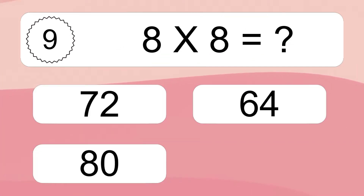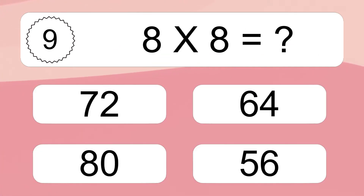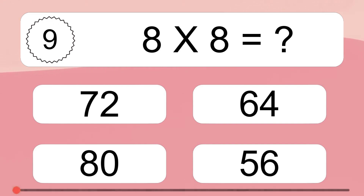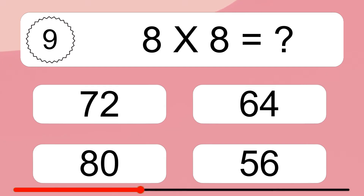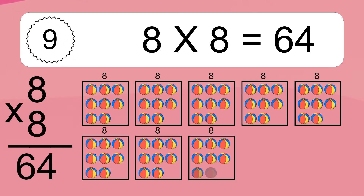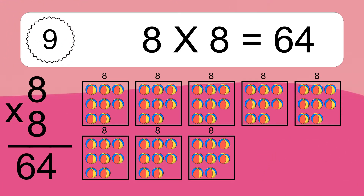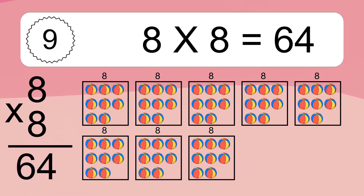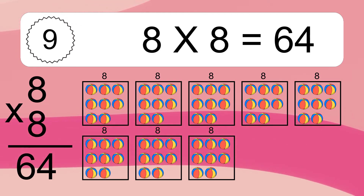8 times 8 equals what? 8 times 8 equals 64. We have 8 boxes, and each box has 8 colorful balls inside. If you count all the balls in all the boxes together, you will have 8 times 8 balls. This equals 64 balls.